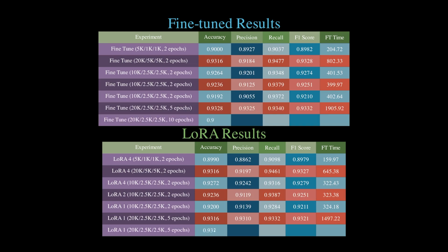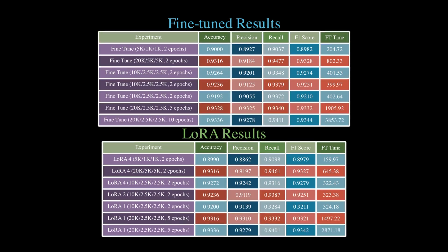So for example, 5k, 1k, 1k, 2 epochs means that the model was trained on 5,000 samples, validated on 1,000 samples and then tested on 1,000 samples using 2 epochs of training.